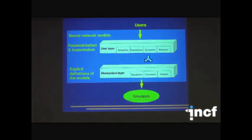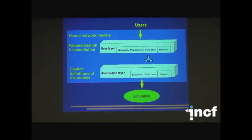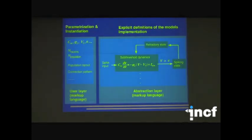So how is NineML designed to solve the problem? In NineML we separate a model into two layers. User layer handles parametrization and instantiation, that specifies parameters and single objects in the model. And we have an abstraction layer that explicitly defines the models, like equations, functions, graphs. And typically the user only needs to handle the user layer, and the abstraction layer tells the simulator how to implement the simulation.